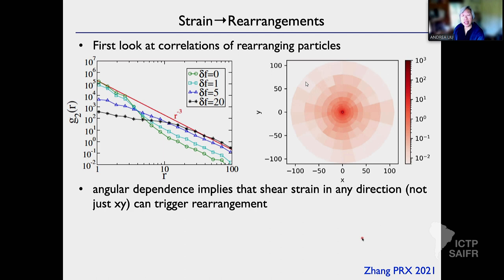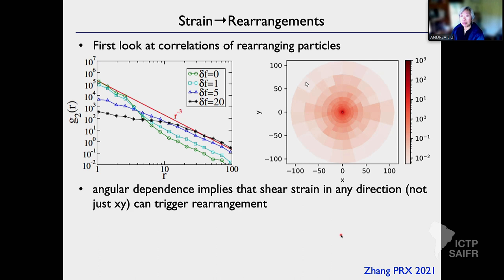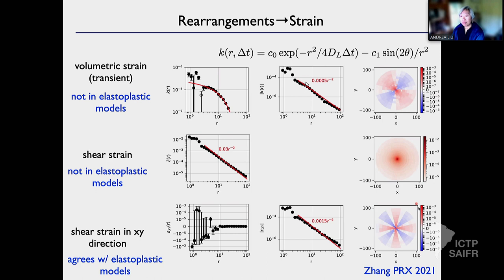If I have a rearrangement at the origin, the pair correlation for rearrangements — the probability of finding another rearrangement at distance R — decays and is nearly isotropic. What that says is that shear strain in any direction, not just XY, can trigger a rearrangement. A rearrangement gives rise to a deviatoric strain, and if the particle is soft enough, the deviatoric strain can push it over the edge to have another rearrangement. That's what comes out of the model — a difference from typical elastoplastic models.